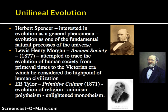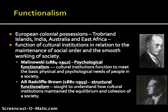Lewis Henry Morgan in Ancient Society in 1877 looked at the evolution of human society from primeval times up to the Victorian era, which he considered to be the high point of human civilization. Tyler looked at religion and various ways of worship — animism, which he saw as the lowest form, polytheism, and then enlightened monotheism. Anthropology has often been implicated in the colonial sphere, and functionalists from England were certainly involved, with much of this school of thought revolving around European colonial possessions such as the Trobriand Islands, India, Australia, and East Africa.